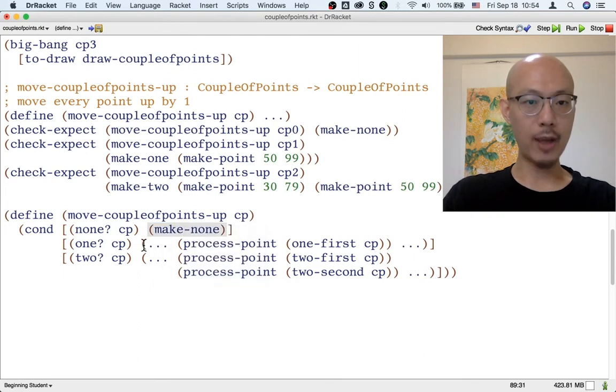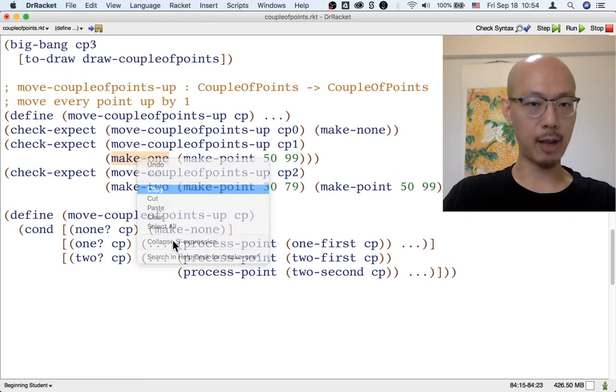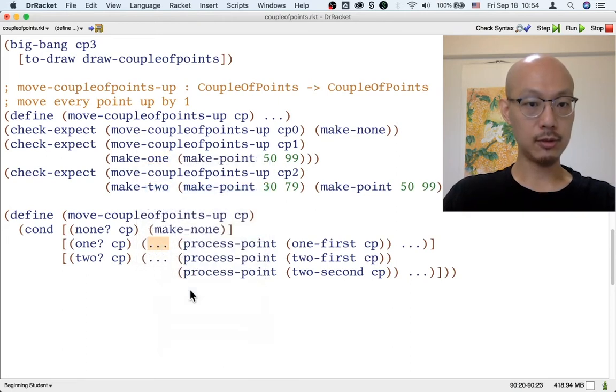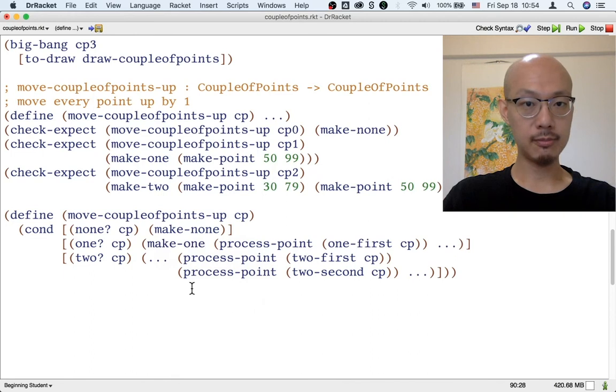The one case gets a little trickier. It looks like from the example, we need to use make1. So I'm going to copy that into the definition. And then we have this point. How are we going to make this point? It's not exactly the same as one first of CP, because one first of the CP is make point 5100. So how can we take the make point 5100 and turn it into make point 5099?